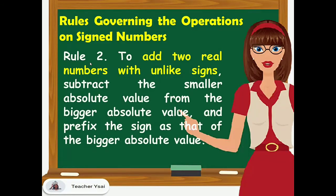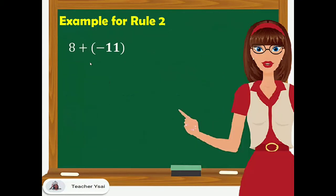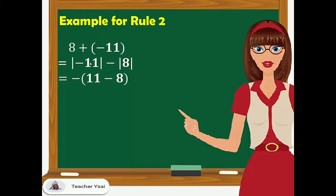Rule number 2: to add two real numbers with unlike signs, subtract the smaller absolute value from the bigger absolute value, and prefix the sign of the bigger absolute value. For example, 8 plus negative 11. Negative 11 has the greater absolute value, so we subtract the absolute value of 8 from the absolute value of negative 11.